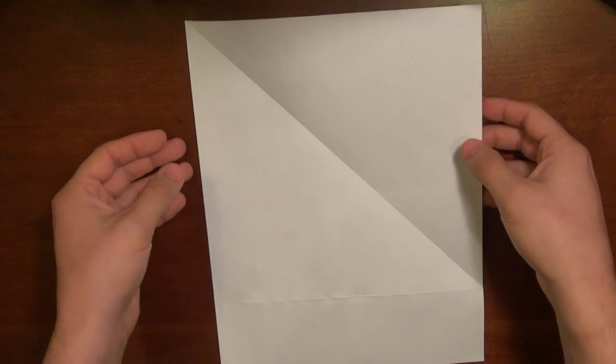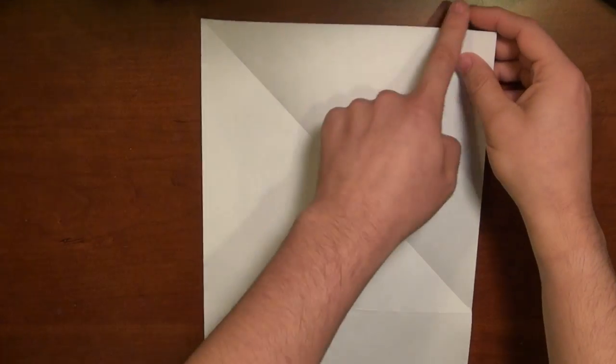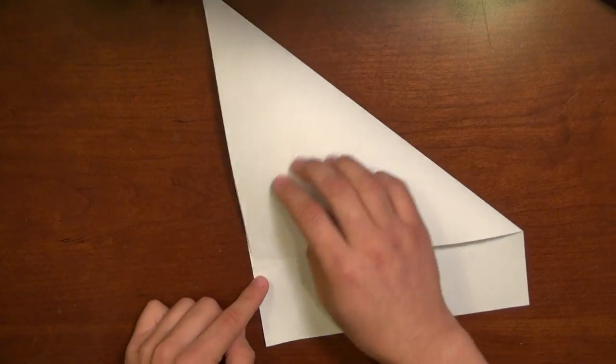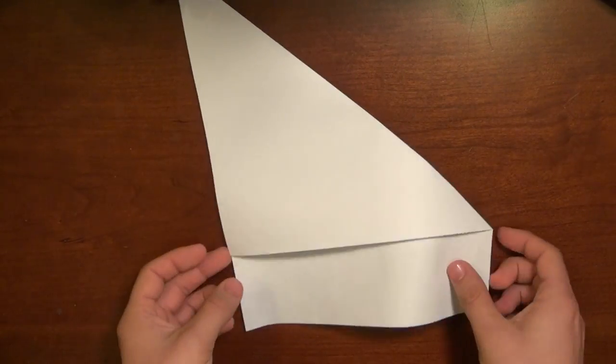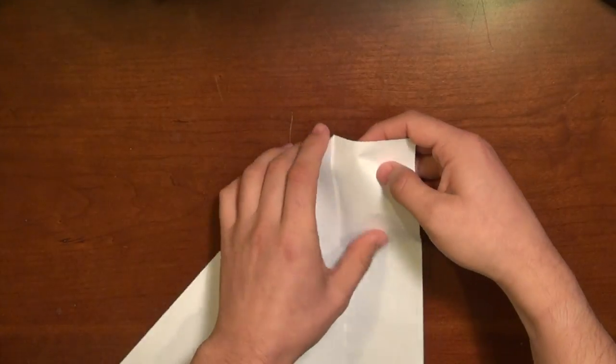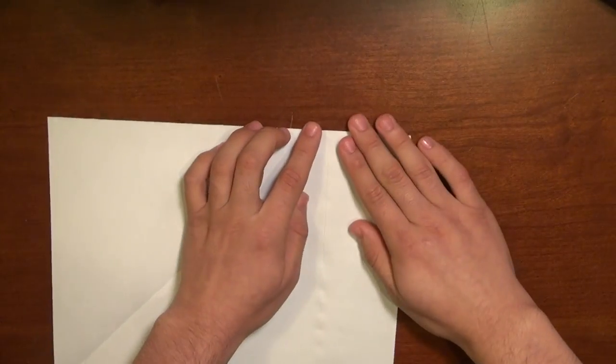To start off, if you're not using square paper, you can take the top edge, fold it across so that it's lined up with the left side, make a crease along the bottom and then you can tear the paper at that crease.